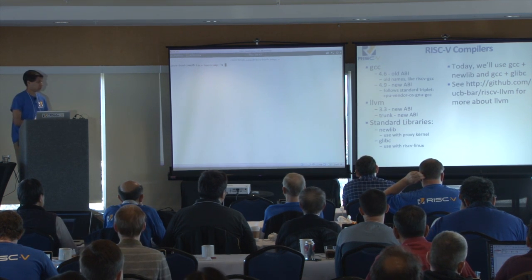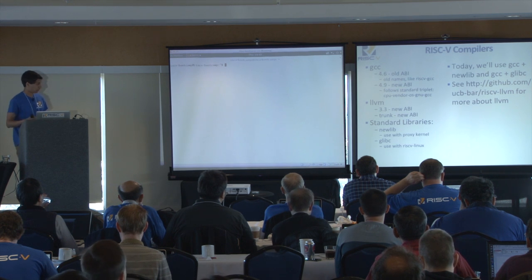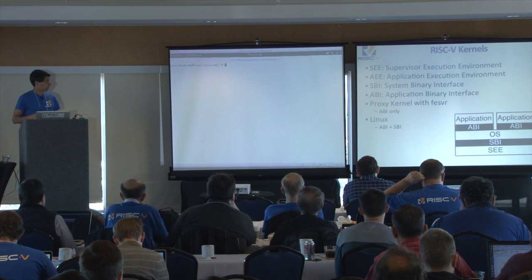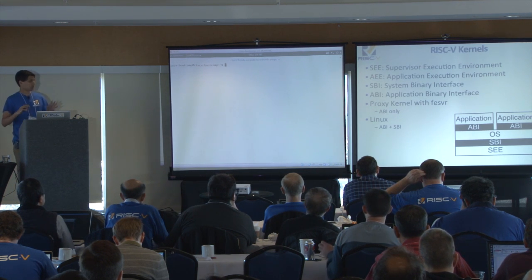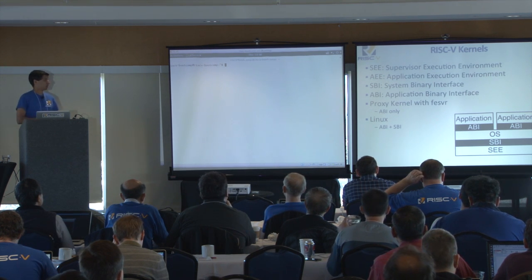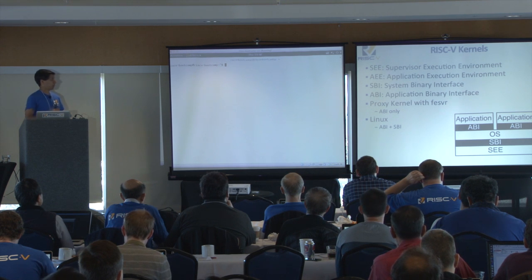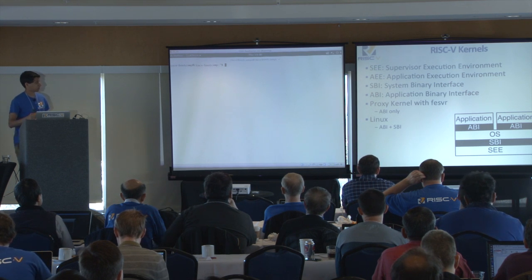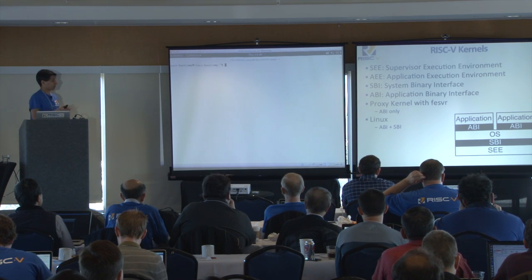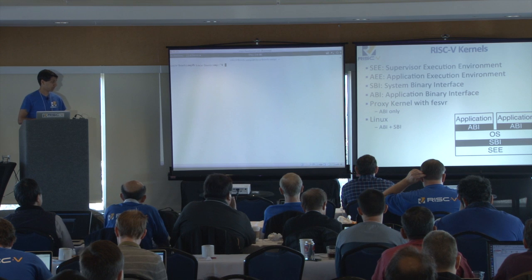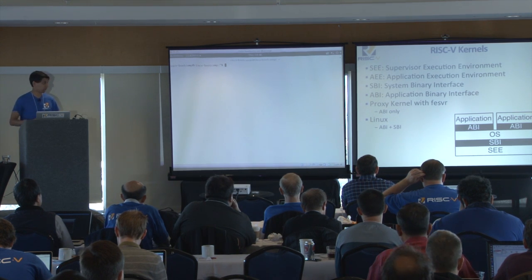We also have two standard libraries: NewLib that works with the proxy kernel, and glibc which runs on top of a Linux-type system. We have two kernels, and this is how they fit into the RISC-V privileged specification. There's the supervisor execution environment and the application execution environment. QEMU or Spike can provide the supervisor execution environment. If you're running on the proxy kernel with the front-end server, you have ABI access. If you're running on top of Linux, Linux will provide the ABI and SBI.